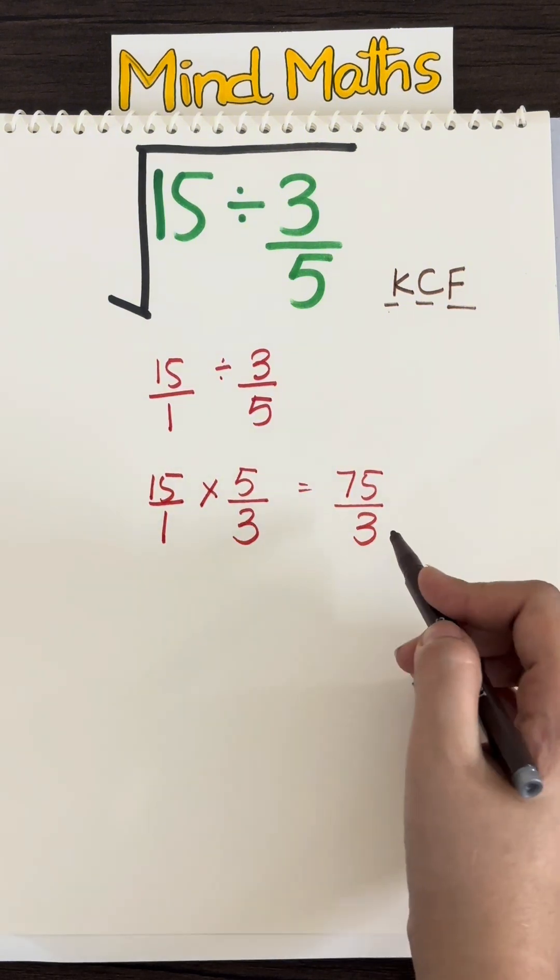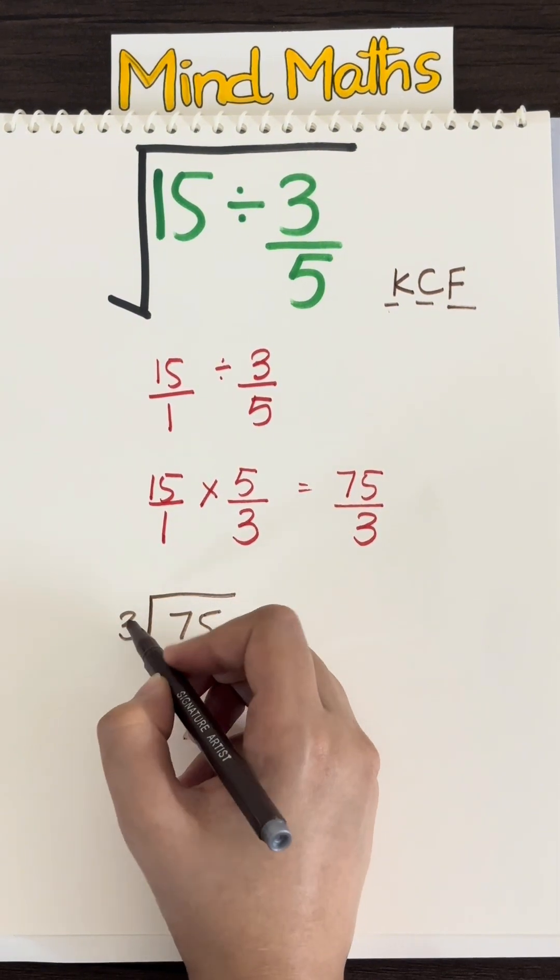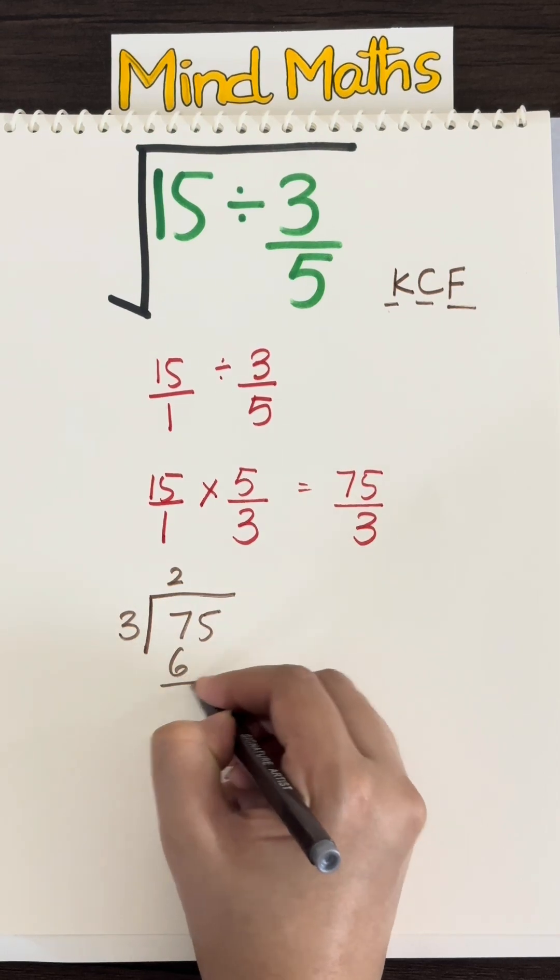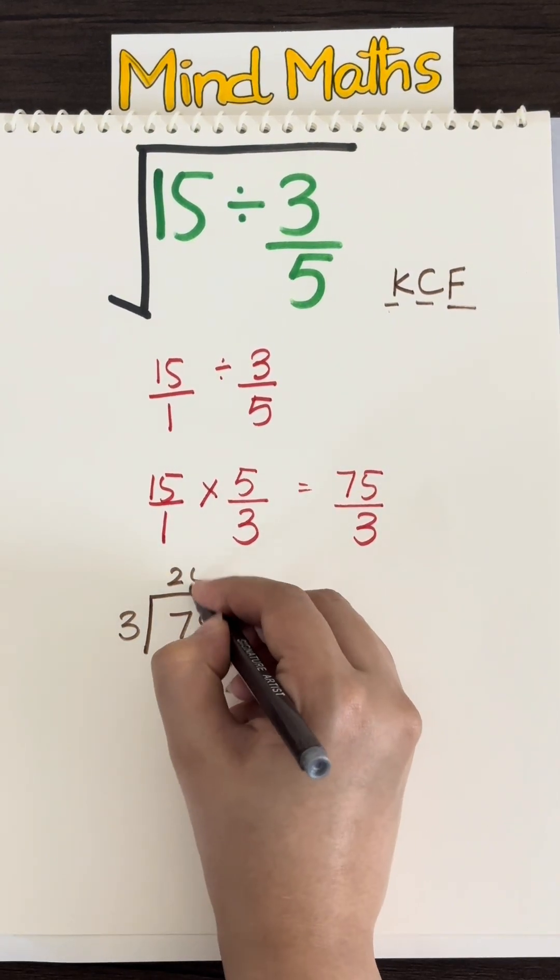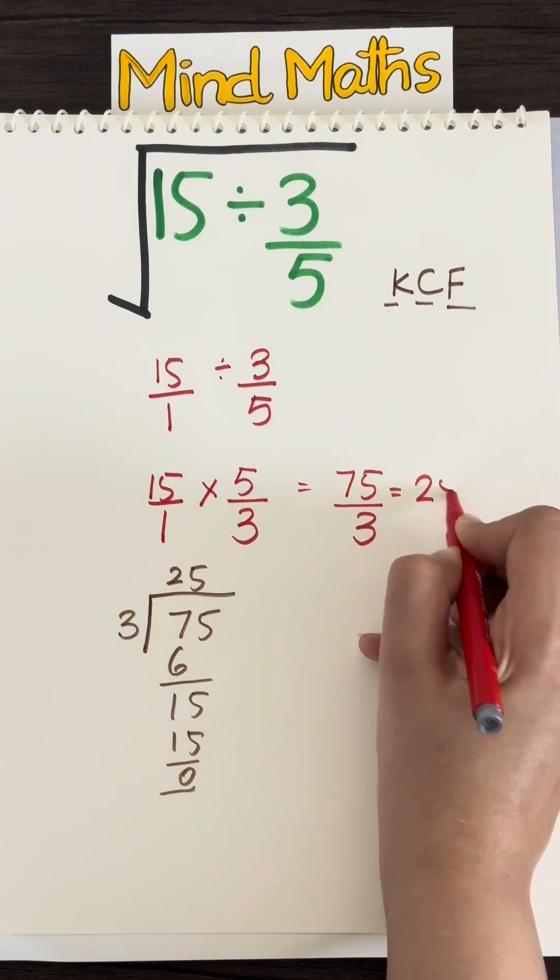Then we got to do 75 divided by 3. You can do this the long way or you can simply do it in your head. So 3 times 2 is 6, we go like 2, 6, 1, 5 as it is and 3 5s are 15, the remainder is 0. So 75 divided by 3 is 25.